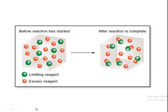Follow the next picture for more clarity. Here green color balls and red color balls are reactants. One red color ball combines with one green color ball to produce the product. Six green color balls combine with six red color balls to produce the product, but six extra red color balls are left over. So the green color balls are the limiting reagent and the red color balls are the excess reagent.